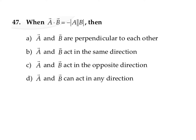In question number 47, it is given that a dot b is equal to minus of ab. We know that a vector dot b vector is nothing but a into b into cos theta. Since the question gives us minus of a into b, we can cancel a b on both sides.